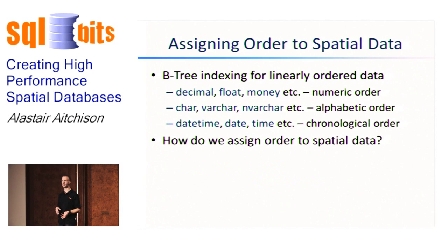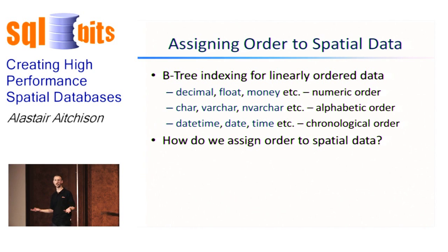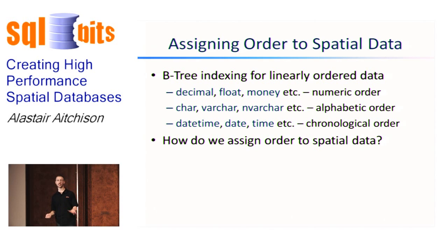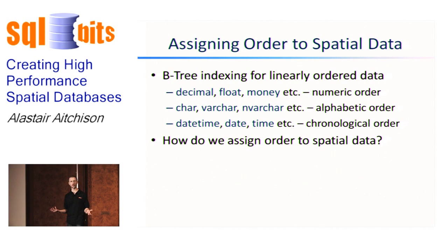Indexes in SQL Server normally use a B-tree structure, and B-trees work very well when your index can be assigned a logical order. Decimal, money, or numeric data can be arranged numerically; string data like chars or varchars can be put into a collating sequence like alphabetical order; and temporal data can be put into chronological order. But then we get geometry and geography — how do we put those into an order so we can index them?